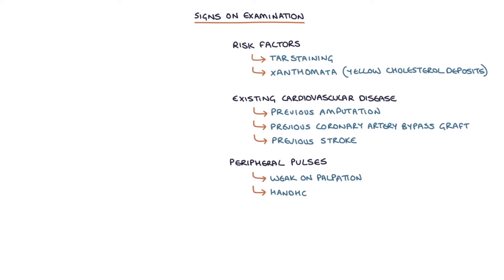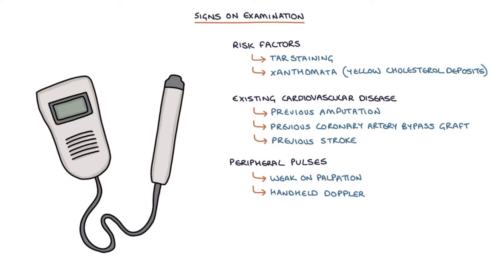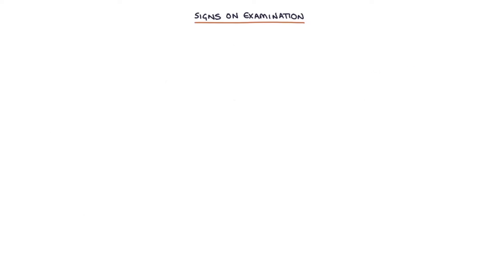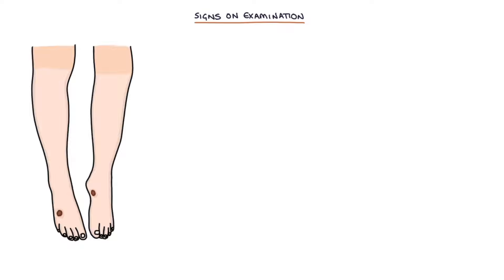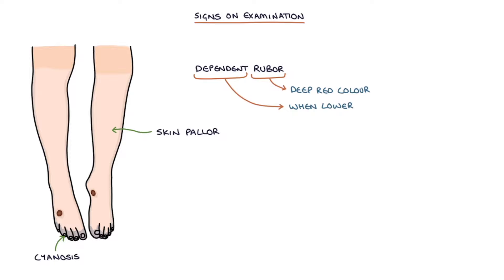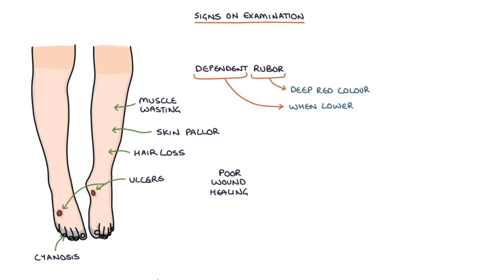A handheld Doppler can be used to accurately assess the pulses when they're difficult to palpate. The signs of arterial disease on inspection are skin pallor, cyanosis, dependent rubor — which is a deep red colour when the limb is lower than the rest of the body — muscle wasting, hair loss, ulcers, poor wound healing, and gangrene, which is the breakdown of skin and a dark red or black change in colouration.